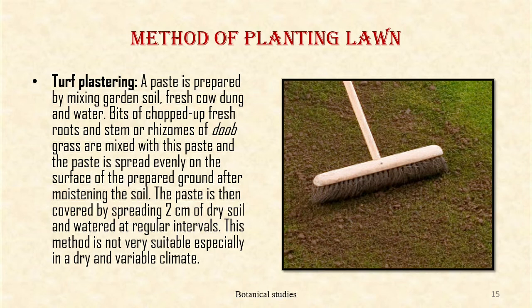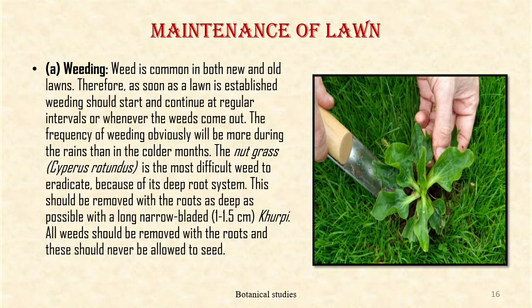Turf plastering: A paste is prepared by mixing garden soil, fresh cow dung and water. Bits of chopped up fresh root, stem or rhizome of Doob grass are mixed with this paste, and the paste is spread evenly on the surface of prepared ground after moisturizing the soil. The paste is then covered by spreading 2 cm of dry soil and watered at regular intervals. This method is not very suitable especially in dry and variable climates.